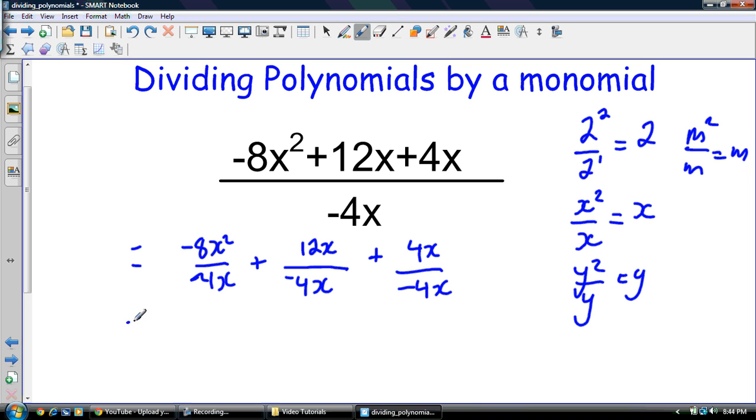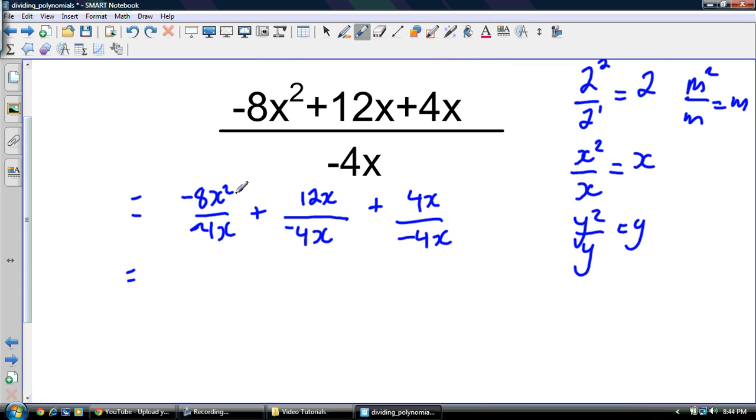So that leads us with...so we got negative 8 divided by negative 4. That's 2. X squared divided by x. Well, it's just x.